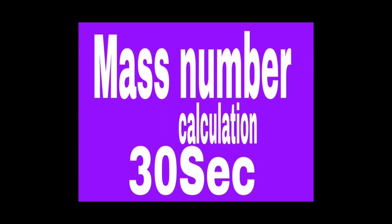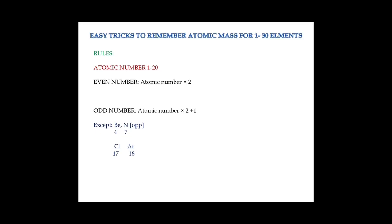Hello students, today I'm going to share easy and simple tricks to calculate mass number for the first 30 elements. If you are sure about the atomic number, then it will be very easy to calculate mass number by using these tricks. There are two different rules. The first rule is applicable for elements whose atomic number falls between 1 to 20.